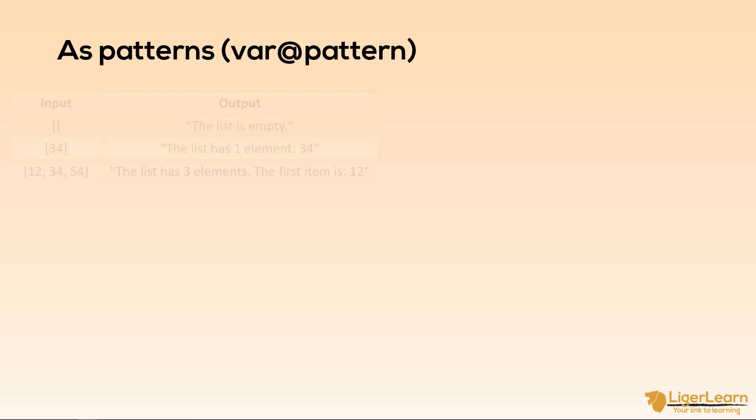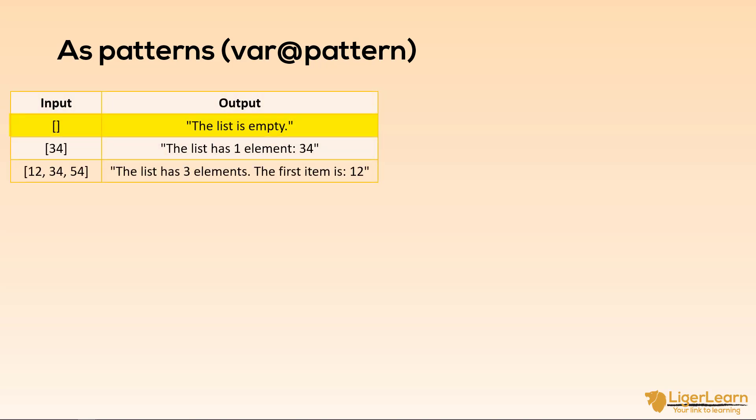So if we give the function an empty list it returns the string the list is empty. If we give it a list containing a single element it returns a description highlighting that the list has one element and then it gives the value. If we give it a list with more than one item it returns a string which describes the number of items in the list and then also gives the value of the first item and only the first item.